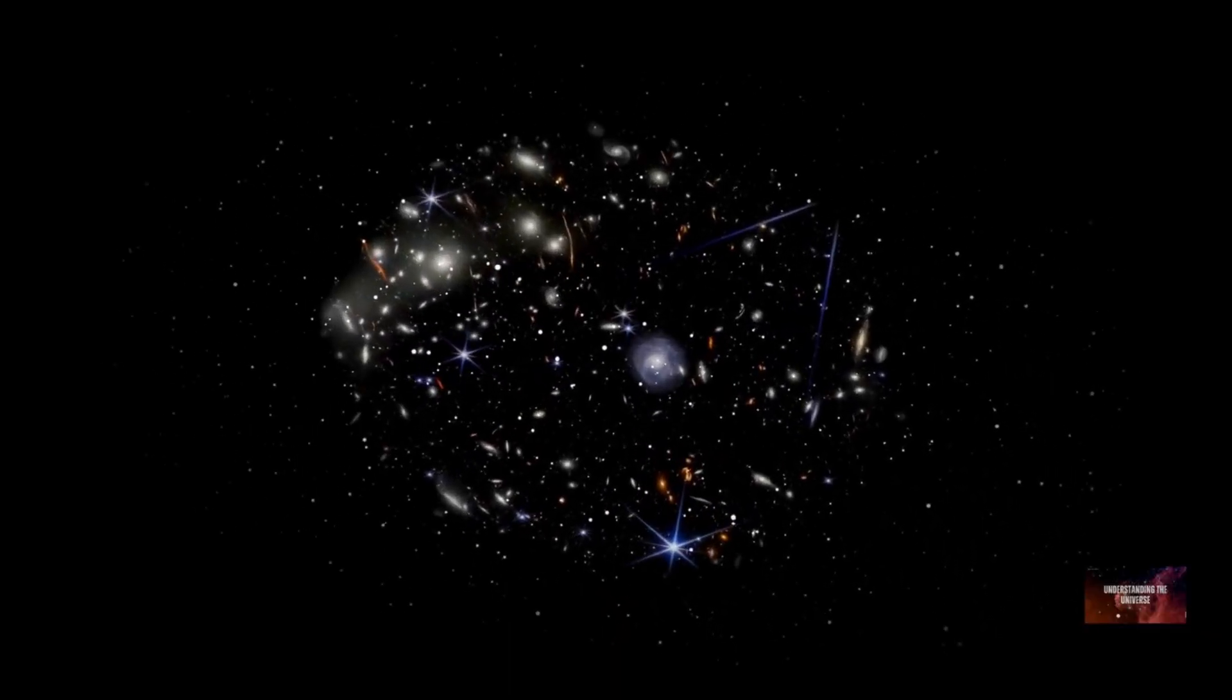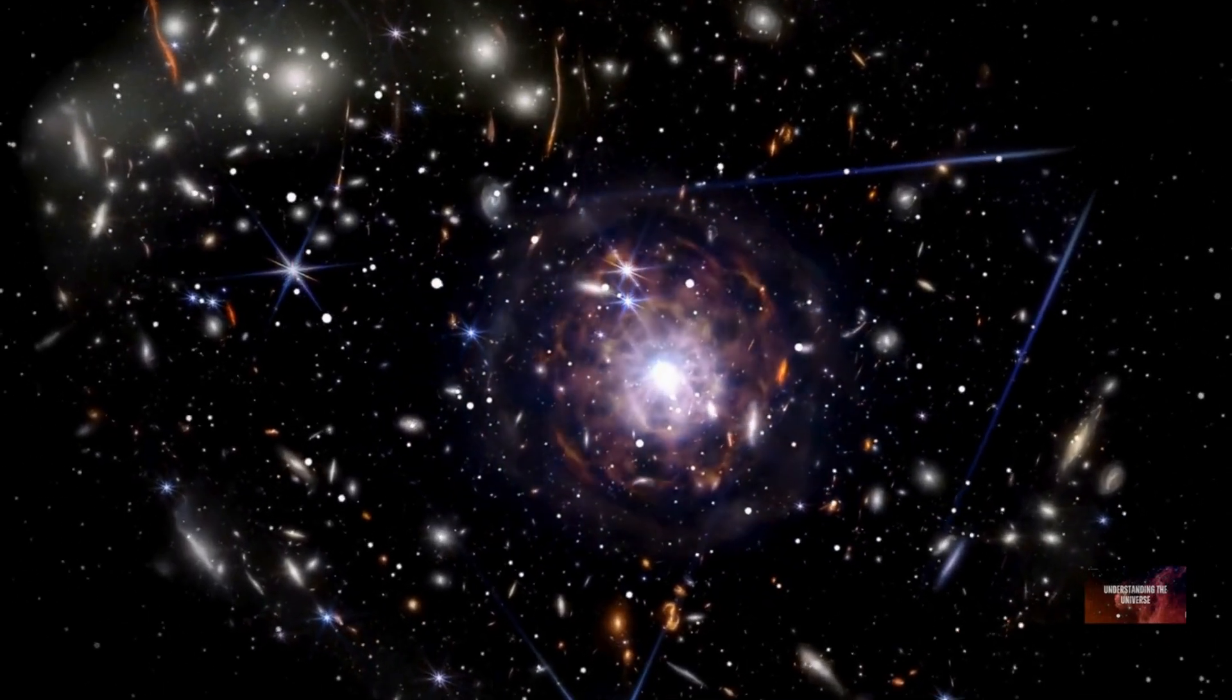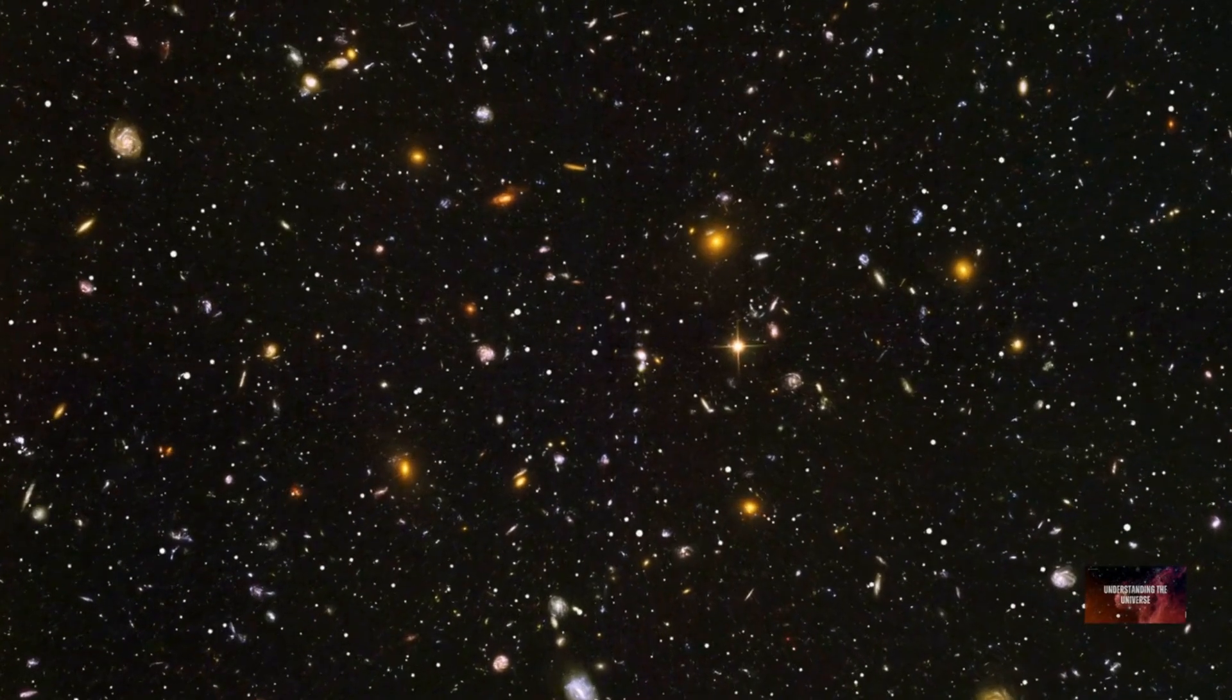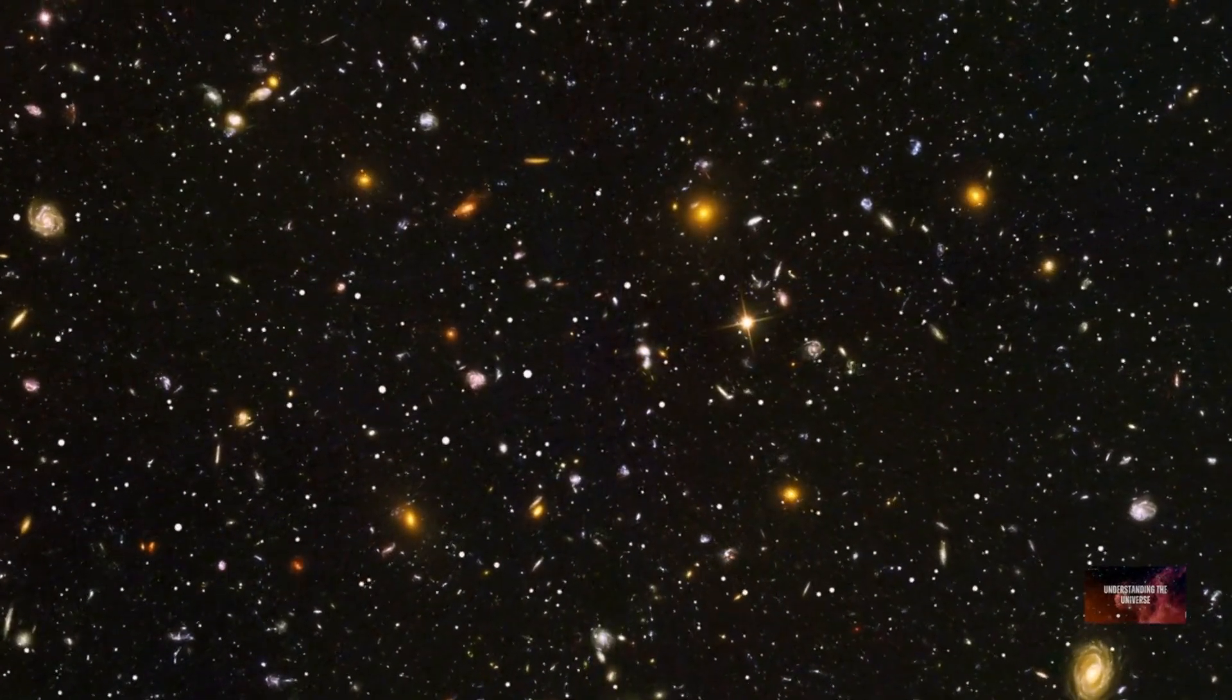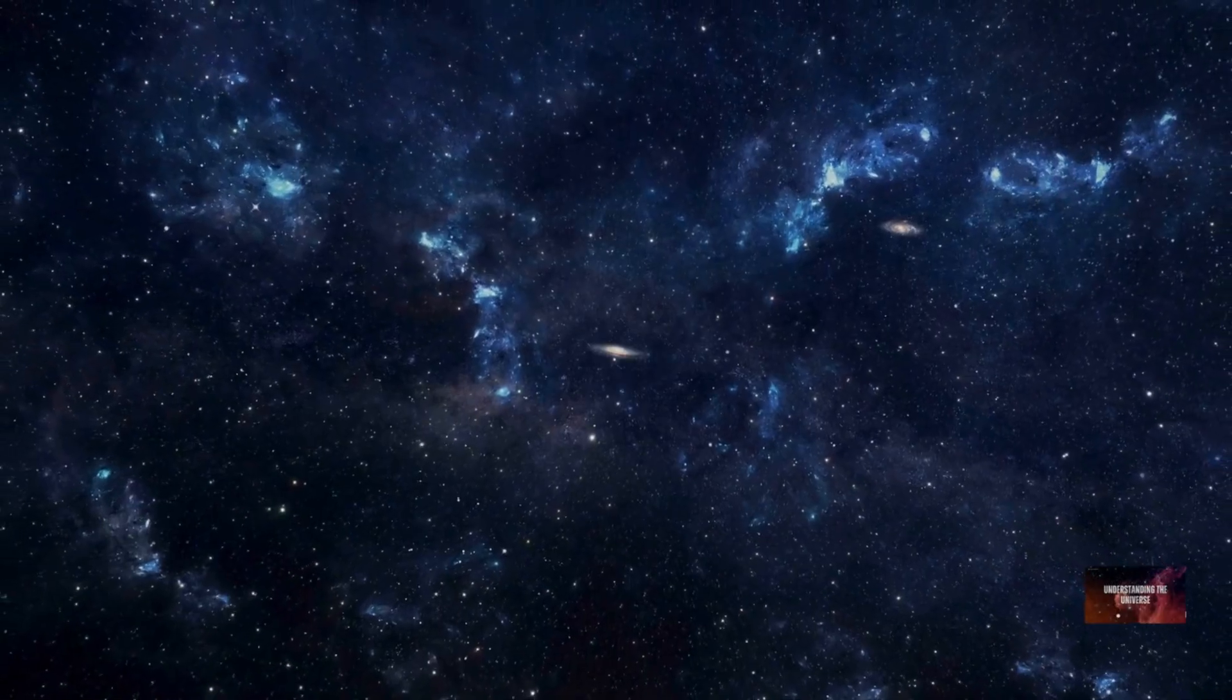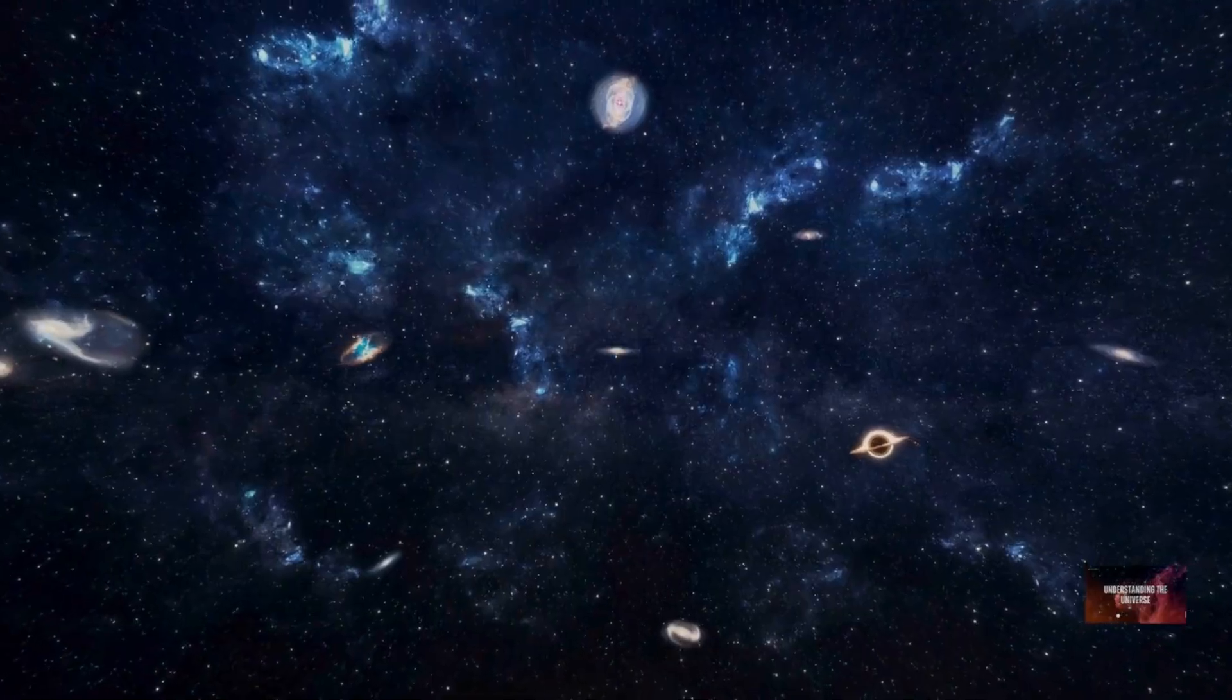The light from the most distant galaxies we detect began its journey billions of years ago, long before Earth even formed. This observable universe is not static, it is ever-expanding. Space itself is stretching, carrying galaxies further apart. This expansion means that the diameter of our observable bubble continuously grows, revealing more distant light as time progresses. While 93 billion light-years sounds immense, it's crucial to understand that this is just the part we can see.